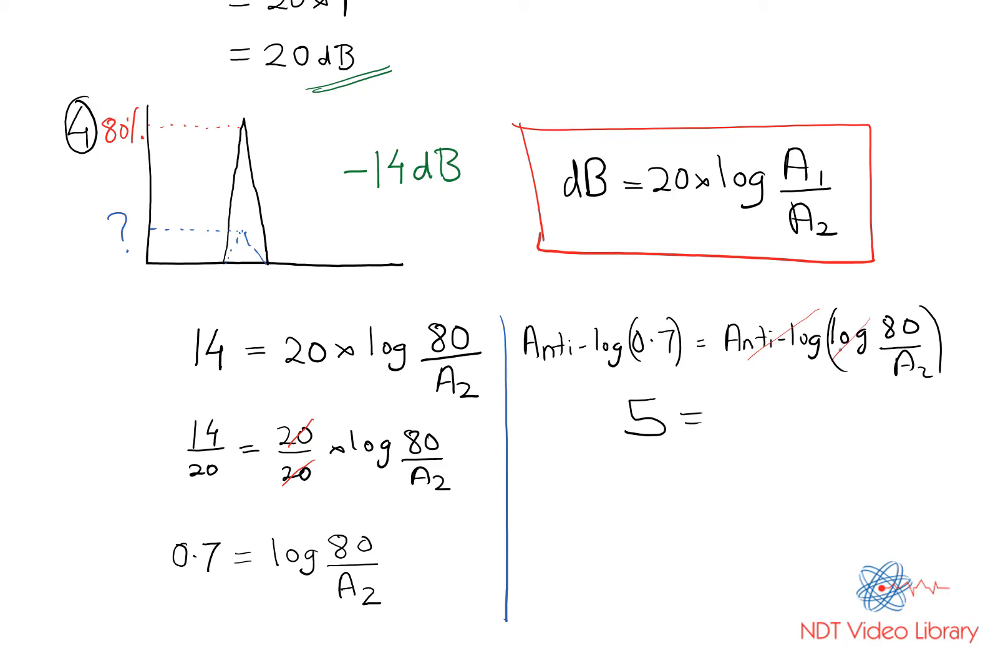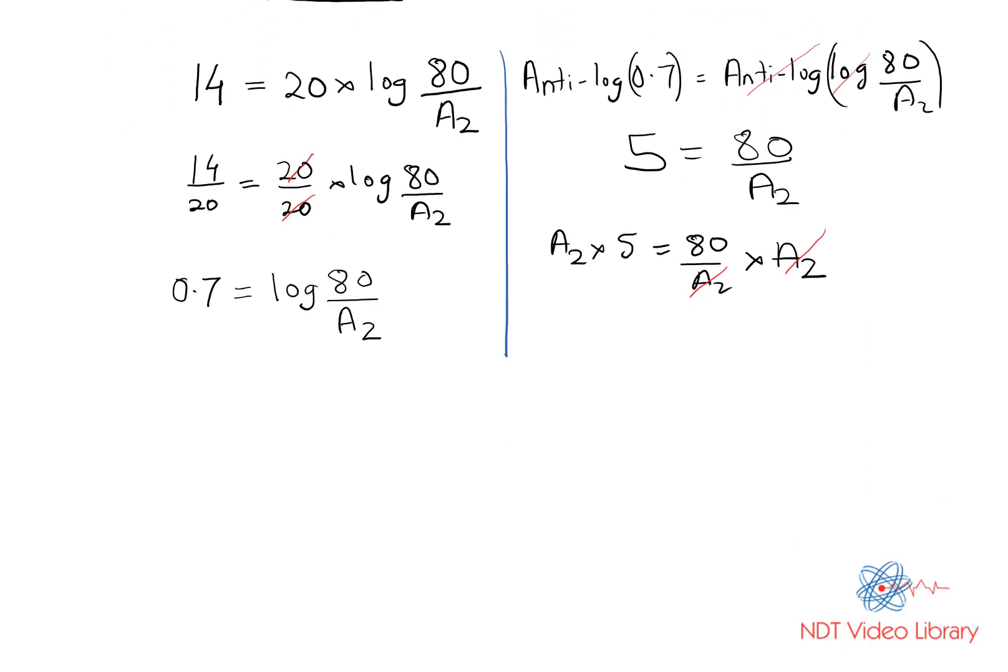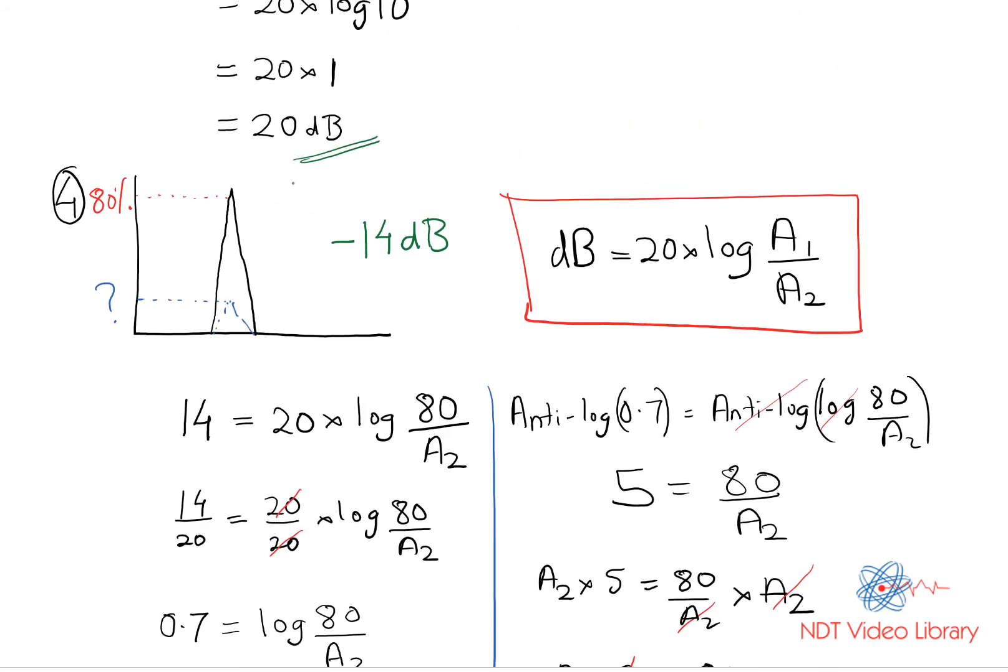Now I want to know A2, so I multiply both sides by A2 and on the other side it gets cancelled. Now I want to get rid of the 5 on the left hand side, so I divide both sides by 5. So A2 equals 16. The final amplitude height on the A-scan is 16 percent.